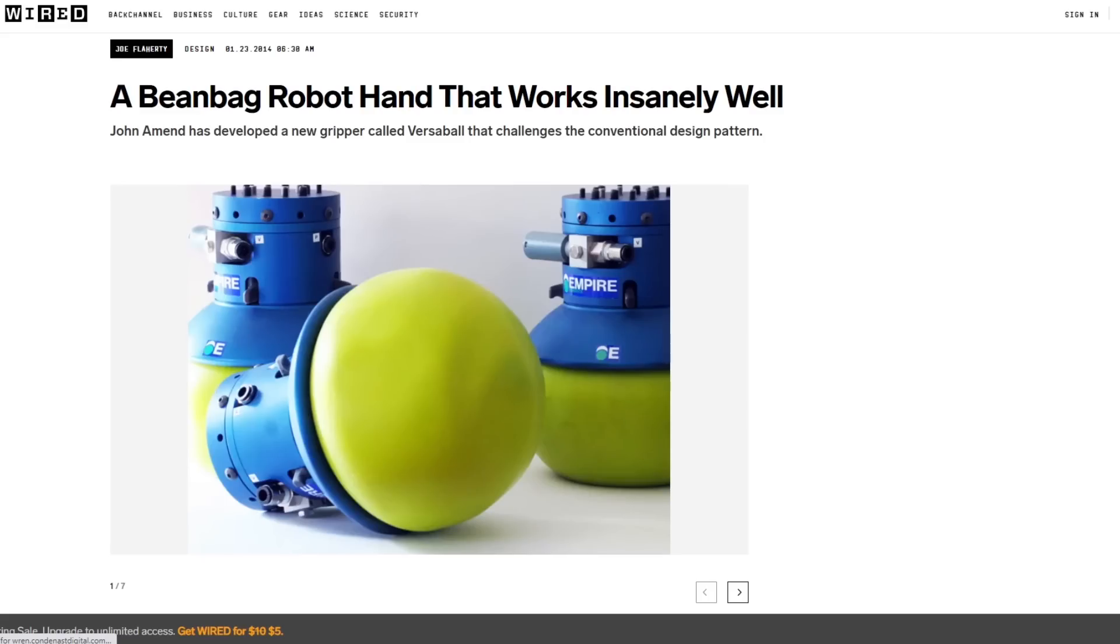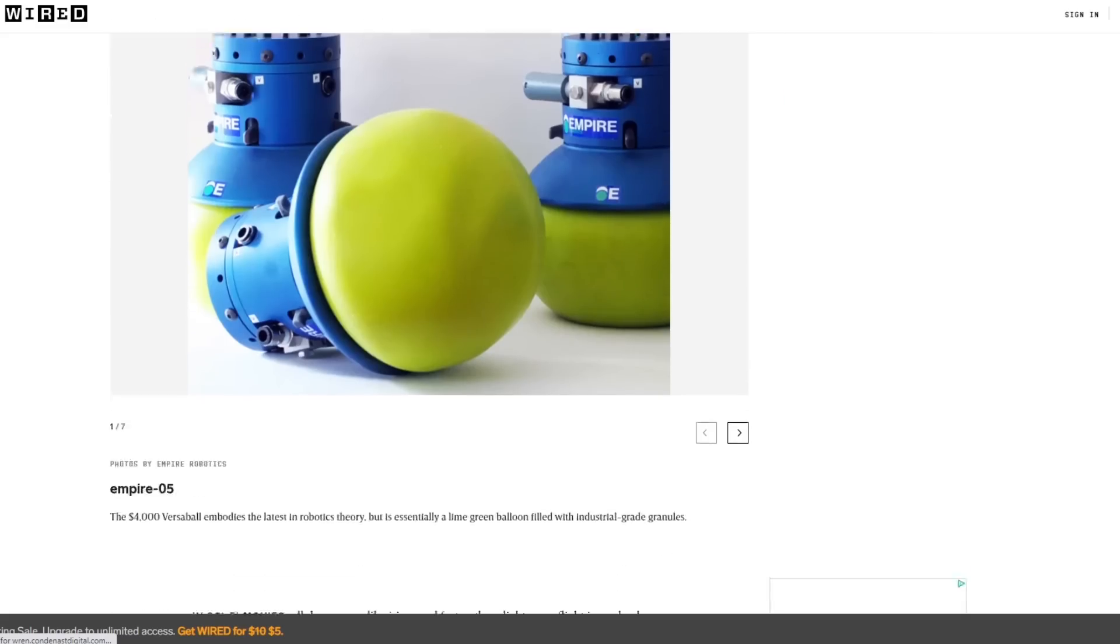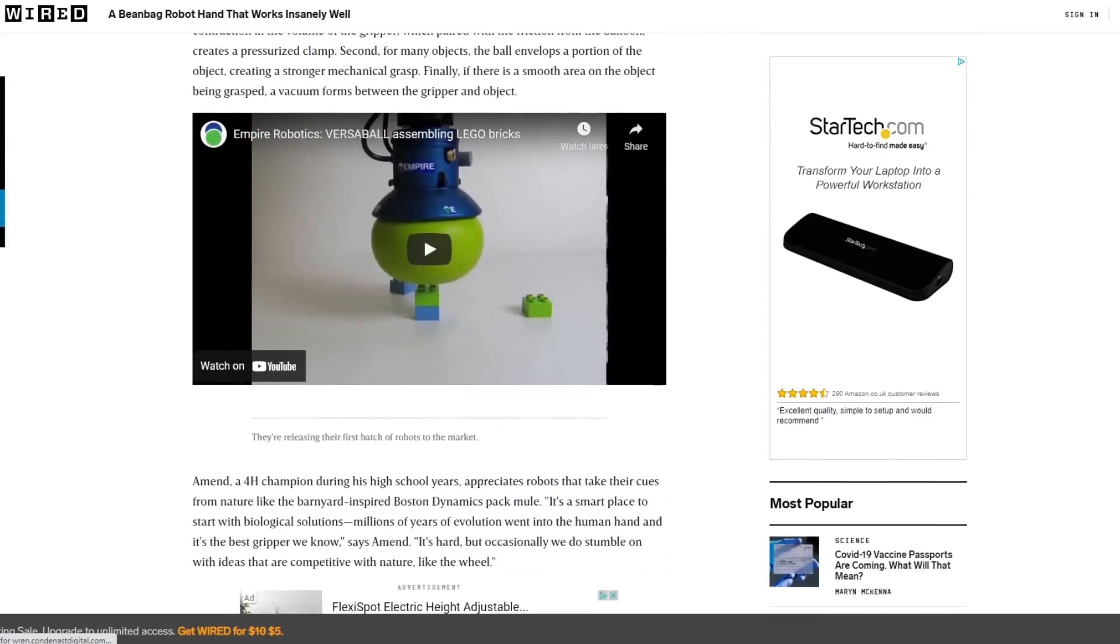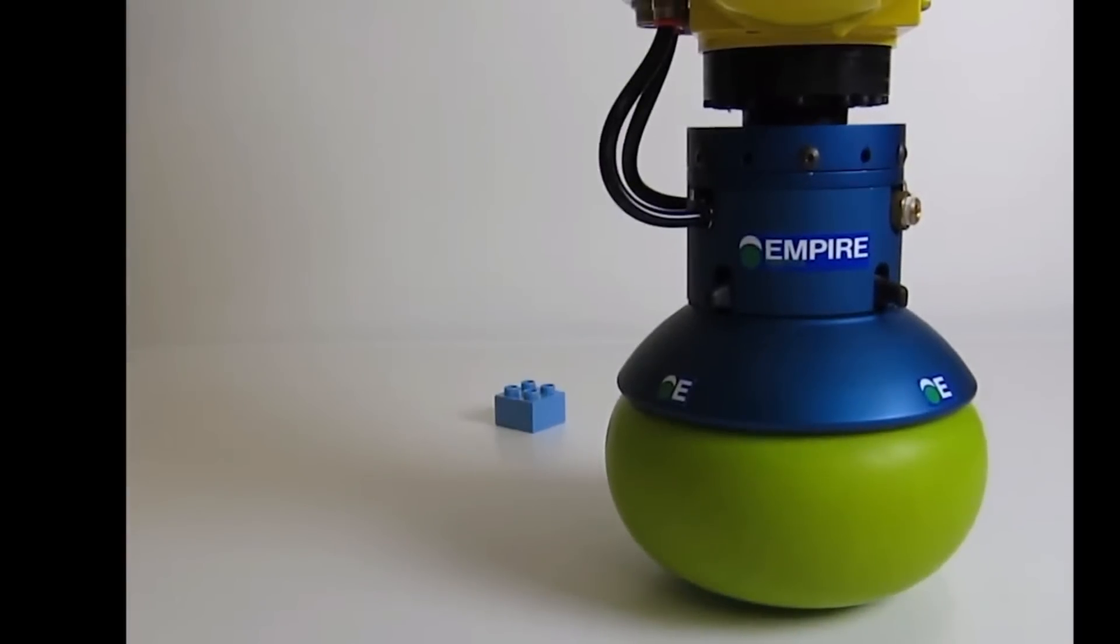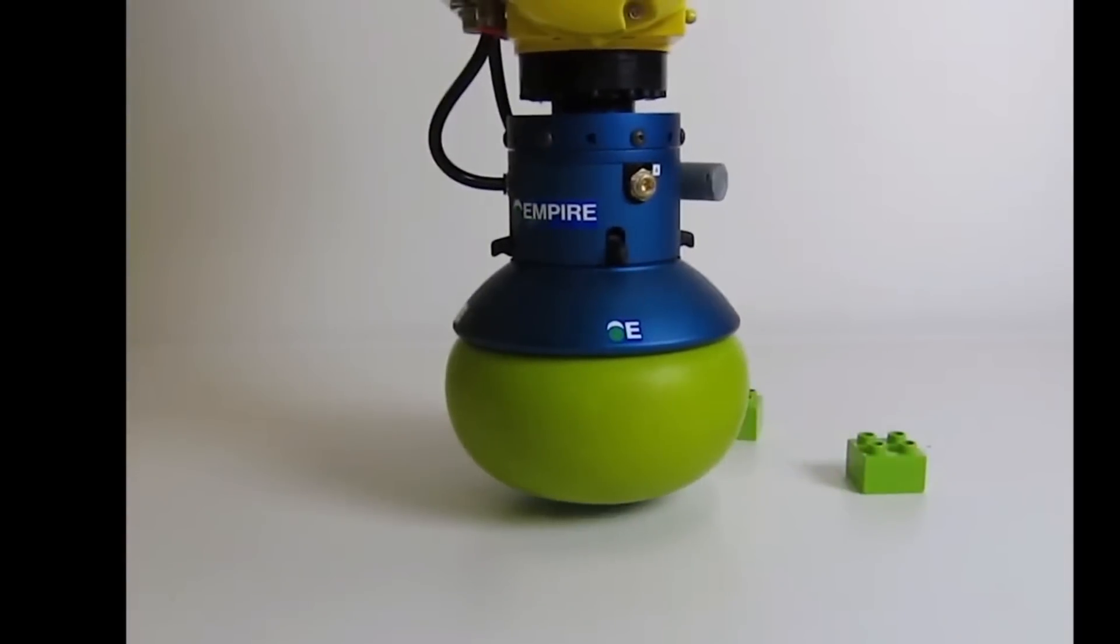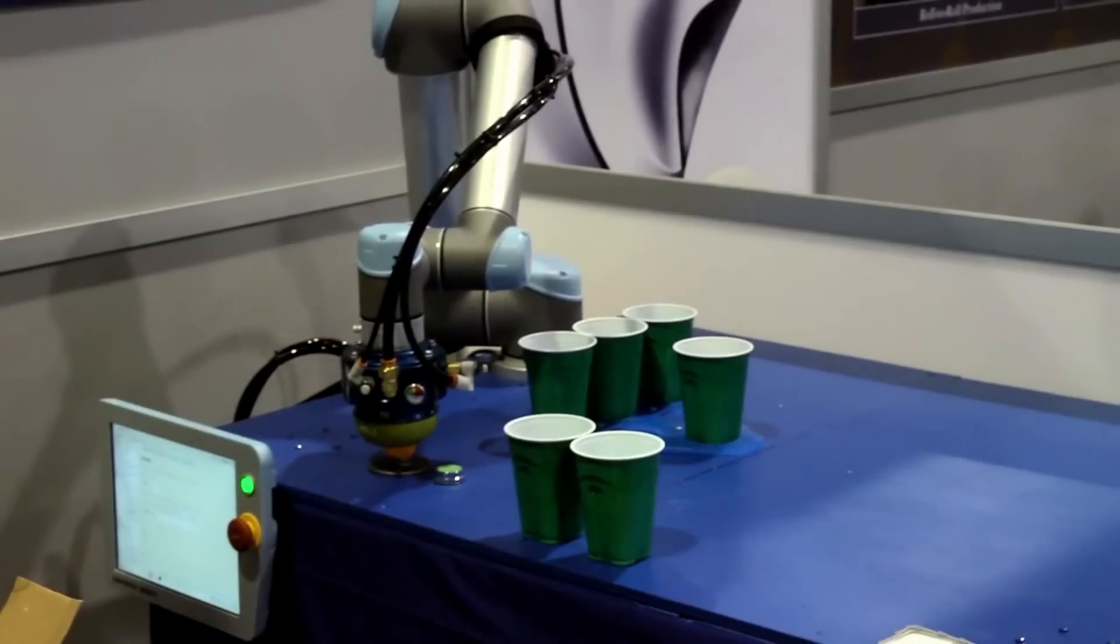I recently came across an old Wired article about a beanbag gripper made by a company called Empire Robotics. There's video on the page of the gripper picking up Lego-style blocks and assembling them, and also video on YouTube of the gripper picking up and shooting ping pong balls.